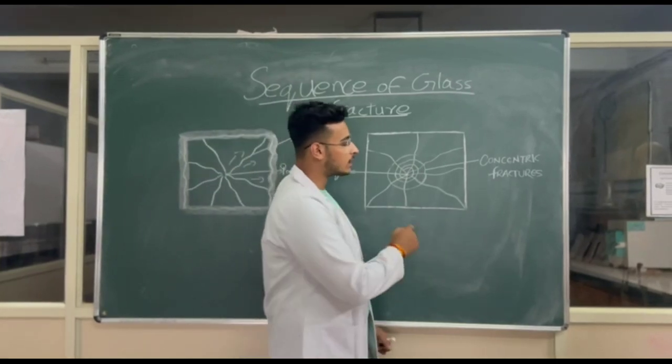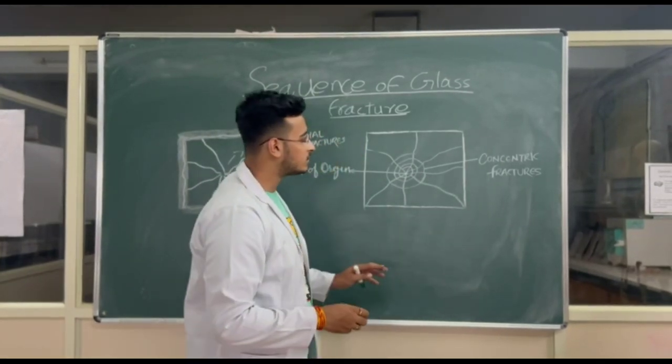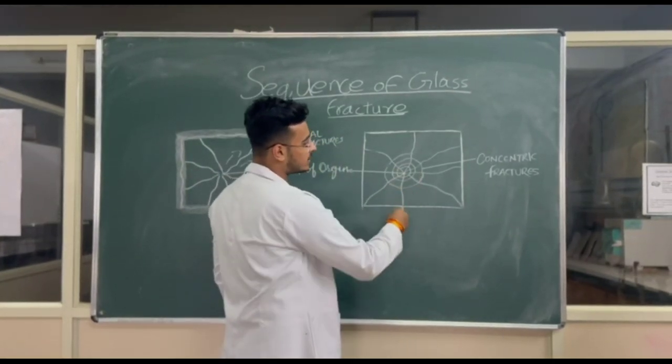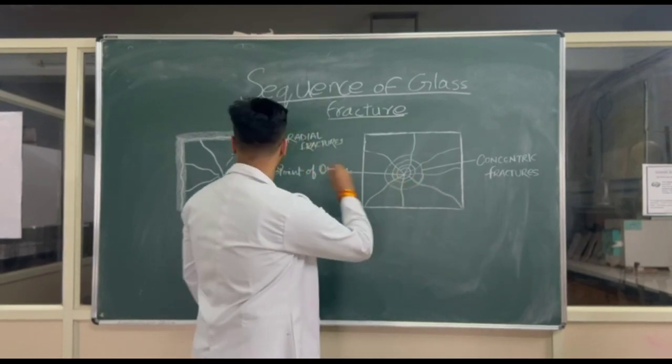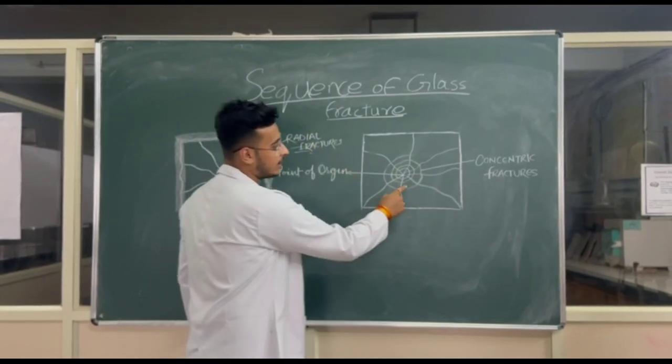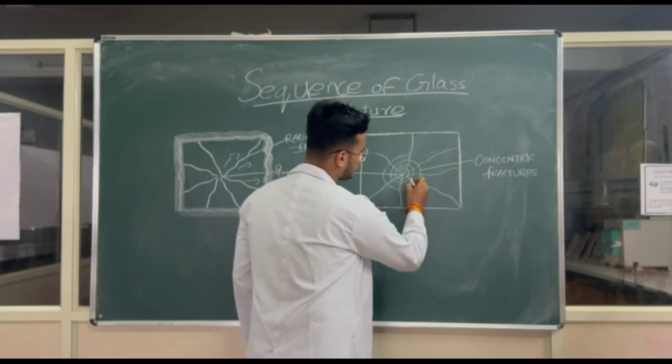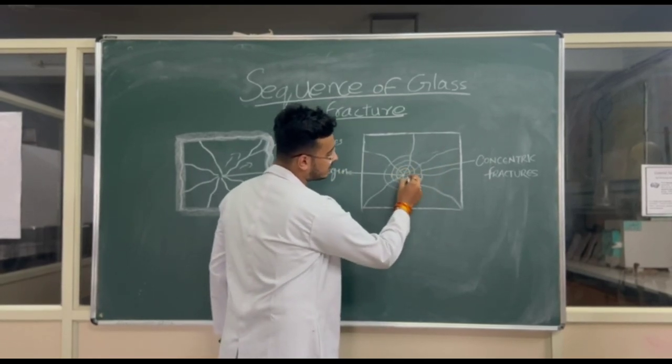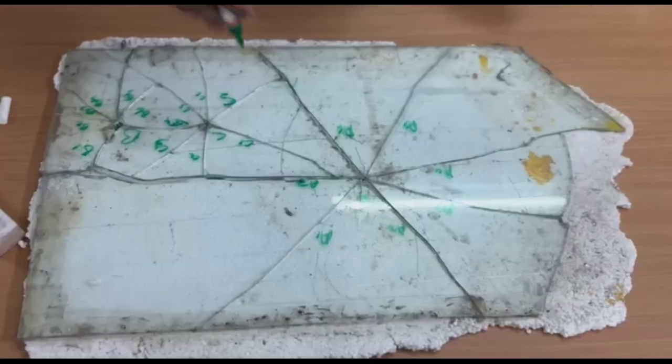Now we will study concentric fractures. These are the fractures which are in the radial form of a circle around the radial fractures. Here we can see the radial fractures and there are cracks which are in this circular shape, known as concentric circles.